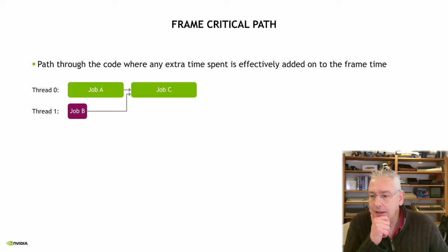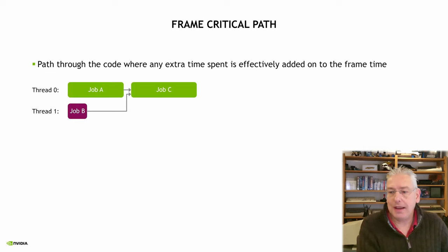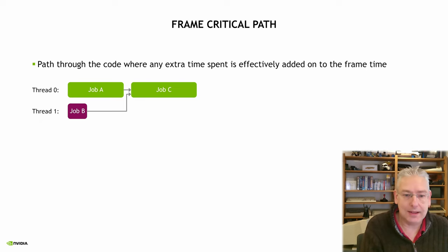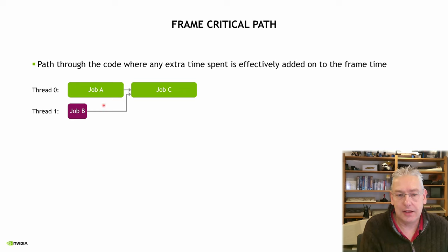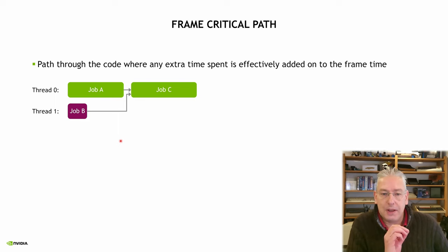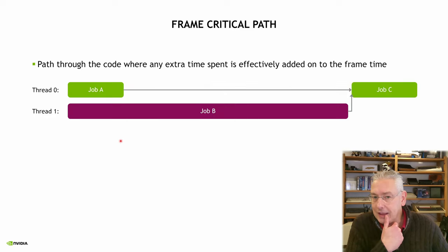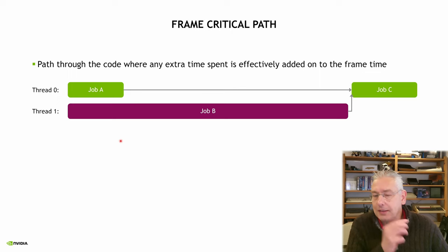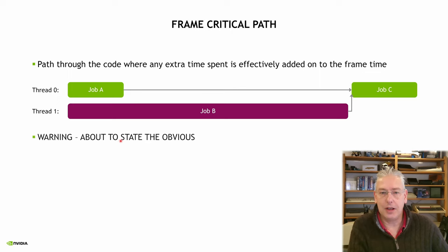But it's a little bit more subtle than that. You might have some code that is only on the critical path when it stalls. If we look at this example, the critical path is job A and job C, and job B is done in plenty of time — so it's not on the critical path. But if job B were to stall for some reason, if it suddenly took a very long time, then it will be on the critical path.